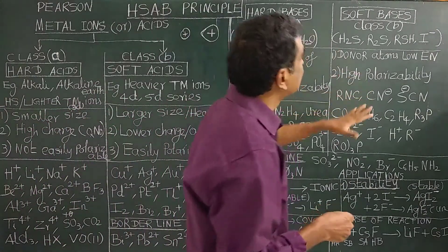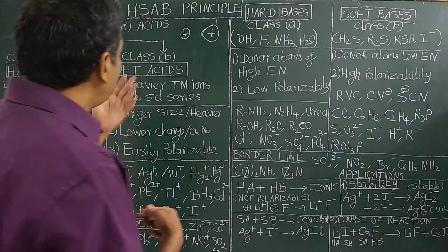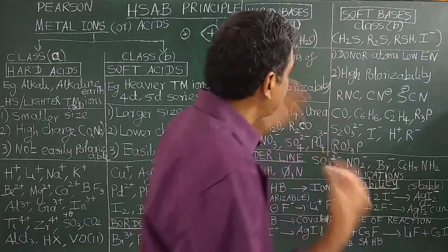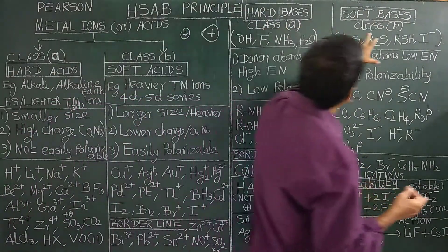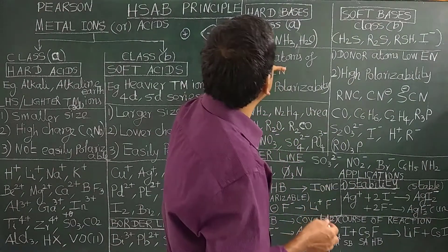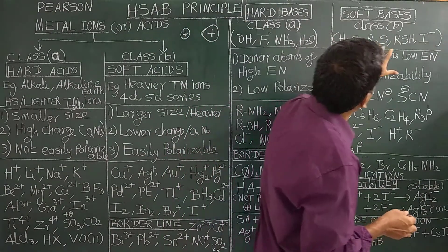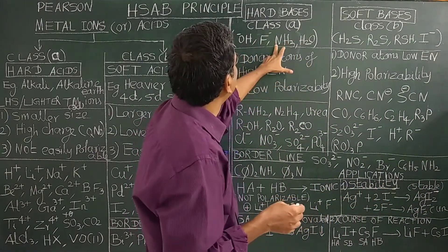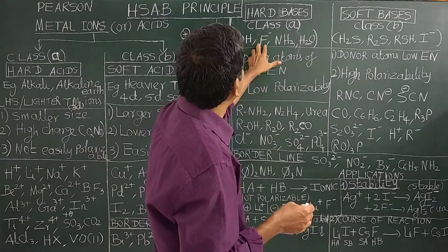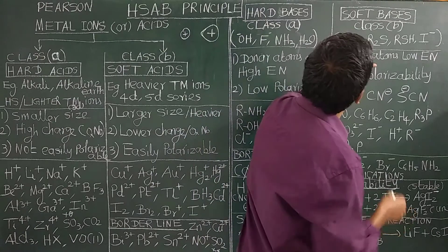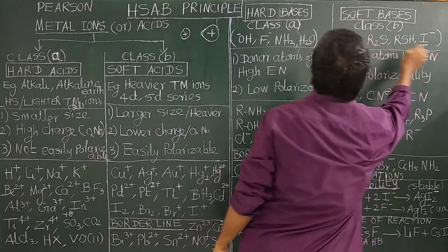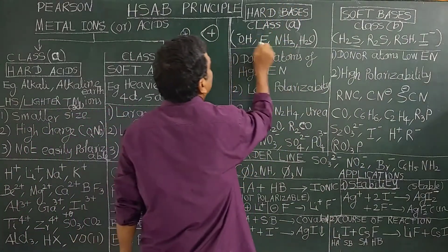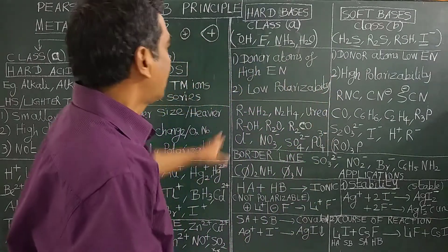Similarly, bases are classified into two types. Class A (hard bases) include OH−, F−, ammonia, and water. The donor atoms in hard bases are highly electronegative.